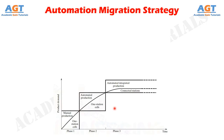Many companies have an automation migration strategy — that is, a formalized plan for evolving the manufacturing systems used to produce new products as demand grows. A typical automation migration strategy is the following.